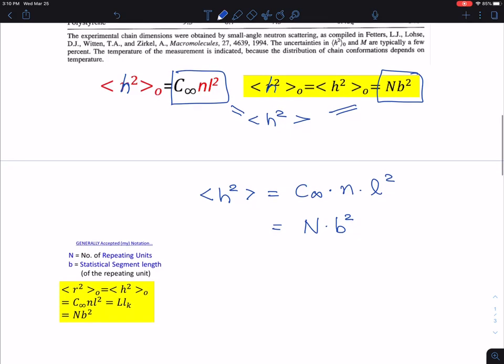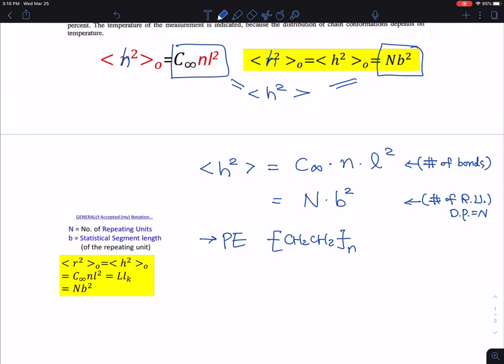But at the same time, this can be just simply used as N times b square. And so now it's a matter of, are you counting number of bonds or are you counting number of repeating units, which is also known as a degree of polymerization. Here is an N. So for particular polyethylene, polyethylene CH2CH2 to the n here, as you remember now, I am going to be extra careful using, particularly in these pages, I will make sure that this is an N.